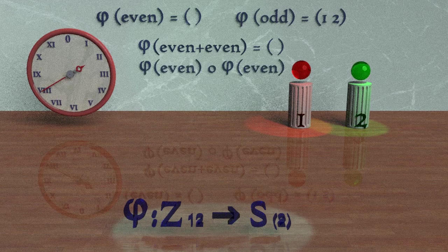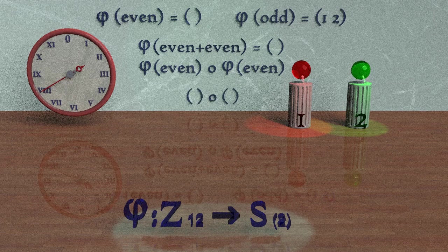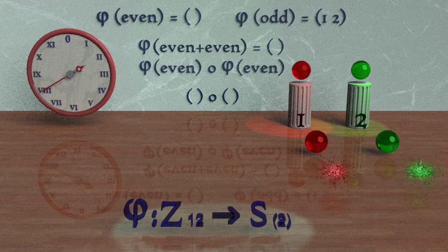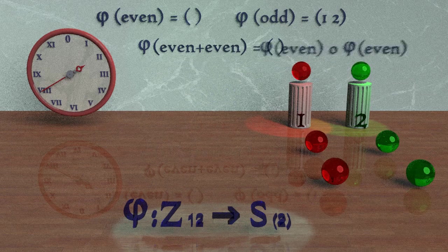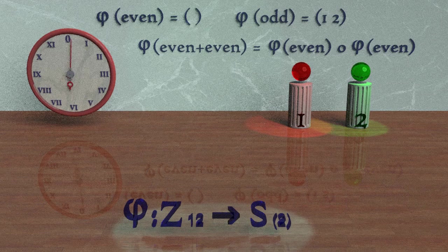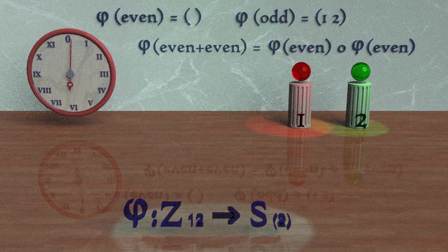But if we were to map the even integers over first, so the equation would be the identity element on the right, followed by the identity element on the left, which is still the identity element. So performing the operation, adding the numbers in the first group, and then mapping the answer to the other group, gives us the same answer as if we had mapped the two numbers over and then performed the composition of functions in the second group.